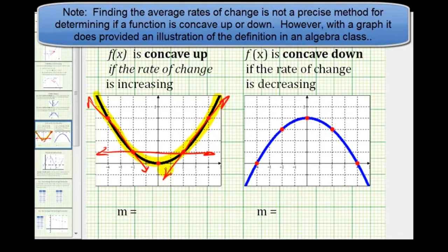the slopes would be negative three halves, then zero, and then positive three halves. Notice how the average rates of change are increasing, and the function is concave up.